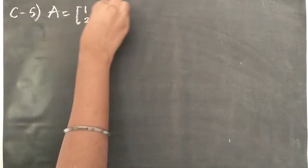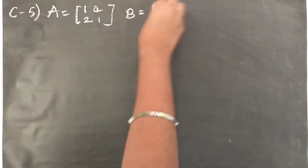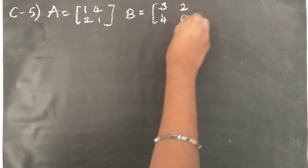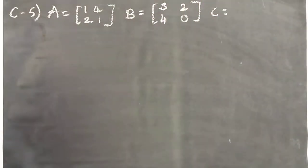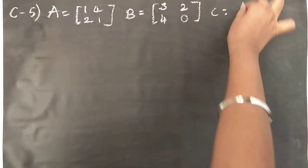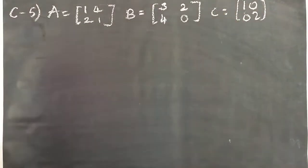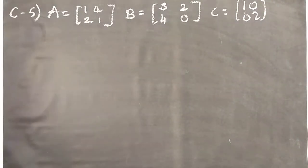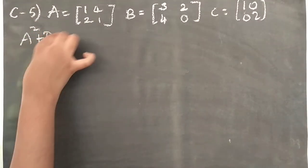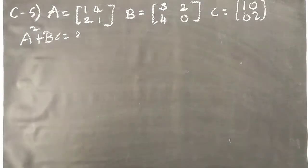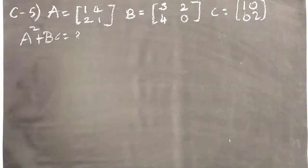So 5th question is also quite easy, same way only. A matrix they gave it as 1, 4, 2, 1. B matrix they gave it as minus 3, 2, 4, 0. And C matrix they gave it as 1, 0, 0, 2. So these are the 3 matrices given to us. We have to find A square plus BC. This is the question given to us. So let's solve it first.